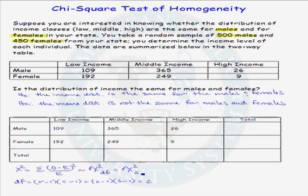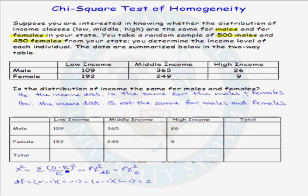How do we get our chi-squared test statistic? We need to sum over all six cells: the observed cell frequency minus the expected cell frequency, that quantity squared, divided by the expected cell frequency. The observed cell frequency is what we saw in our sample. We must now compute the expected cell frequency.